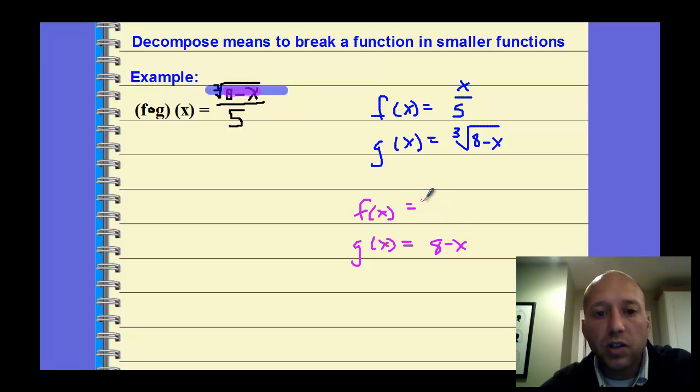That little group or chunk is going to be 8-x, which means the fraction has to be the cube root of x, all over 5. So that substitution would still give you this composition. There's more than one answer there, but can you break it up?